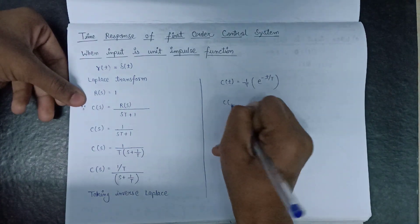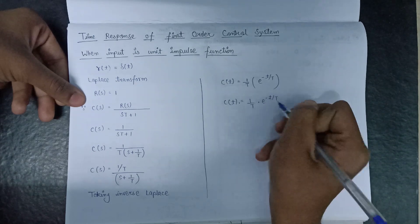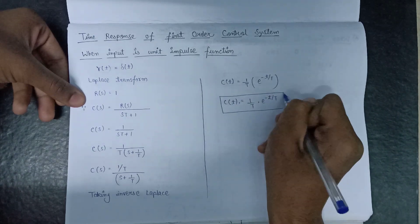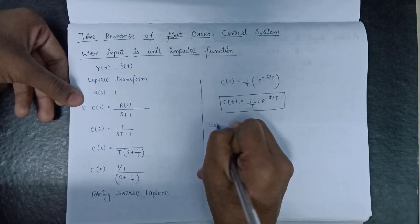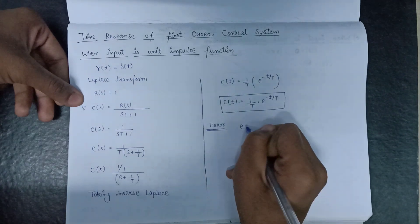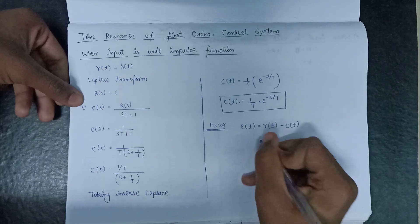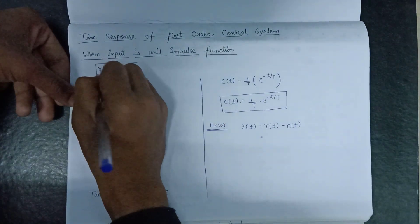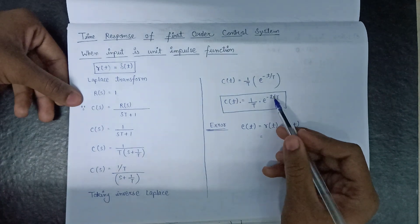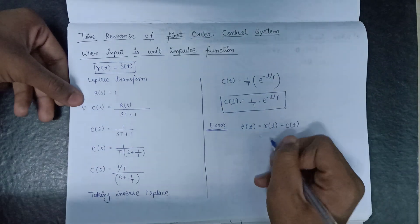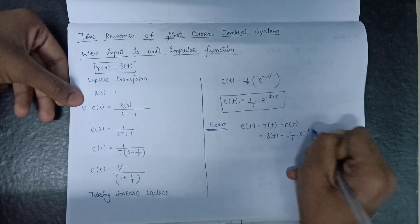So the expression of C of t is: C of t equals 1 over T times e to the power minus t over capital T. Moving on to the error: since error E of t equals R of t minus C of t, and we have R of t equals delta of t and C of t equals 1 over T times e to the power minus t over T, substituting these values we get E of t equals delta of t minus 1 over T times e to the power minus t over T.